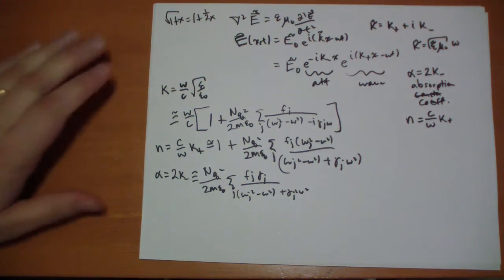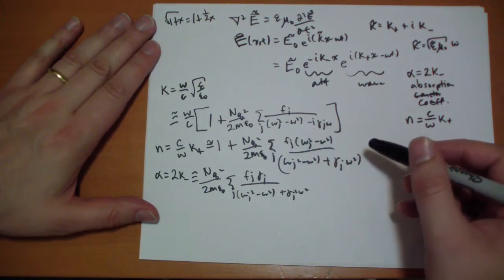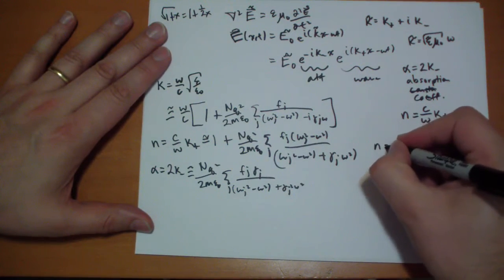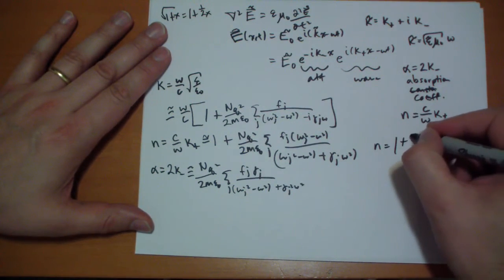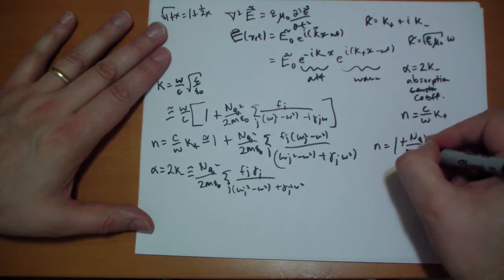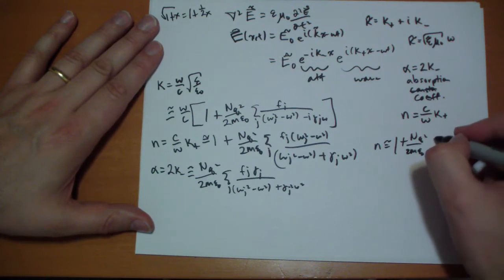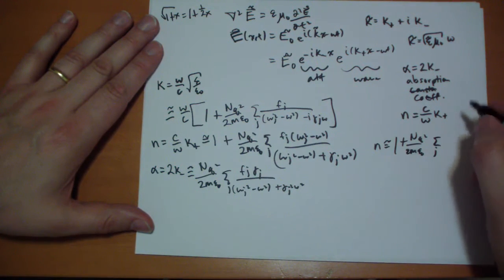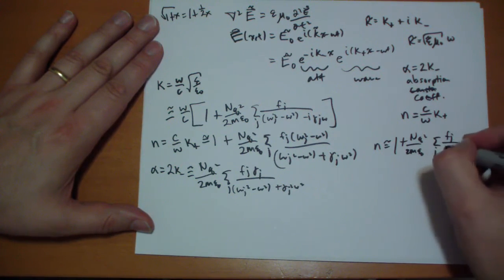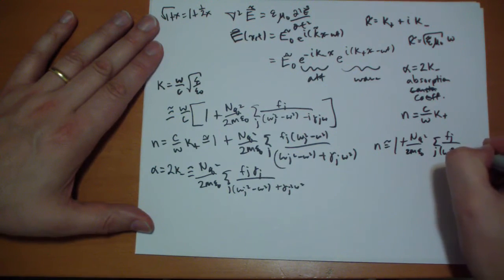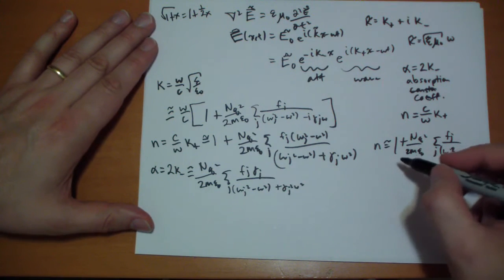Now if you stay away from those resonant frequencies and that's all you're working and you're ignoring those, then you can just drop that whole term. You can drop this whole term here. So your n would be looking like this. N would be equal to one plus n q squared over two m epsilon naught, sum over j number of electrons times just the frequency difference squared. And that's if you stay away from all the omega j's.